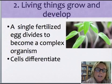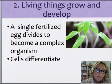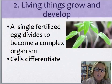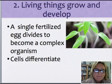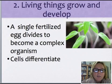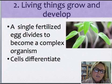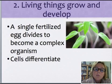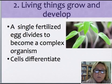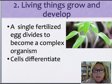The second characteristic of living things is that living things grow and develop. Everything starts out as a single cell, basically a fertilized egg that divides multiple times until it becomes a complex organism. Cells do something called differentiation, which means that as your cells reproduce, they turn into different cells in your body.